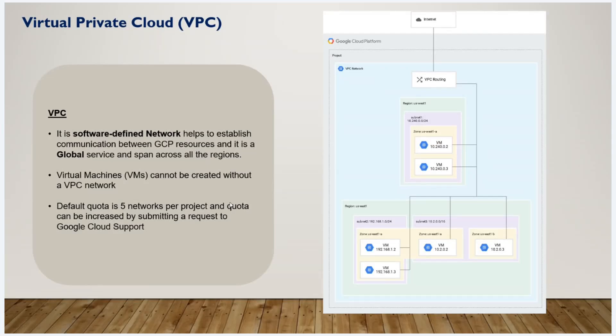If you want to create a resource, you need to create a network which is called Virtual Private Cloud (VPC). It is a private network. VPC is a global service — AWS is a regional service, while Google Cloud VPC is a global service.